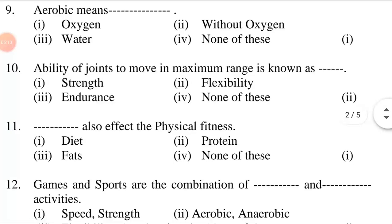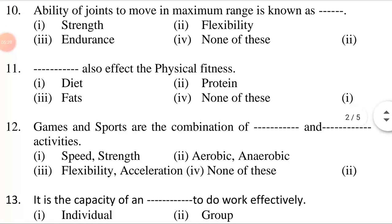Aerobic means dash. First option: oxygen. Second option: without oxygen. Third option: water. Fourth option: none of these. The answer is the first option — oxygen. Aerobic means oxygen. Ability of joints to move in maximum range is known as dash. Options: strength, flexibility, endurance, none of these. The answer is second — flexibility. Ability of joints to move in maximum range is known as flexibility.